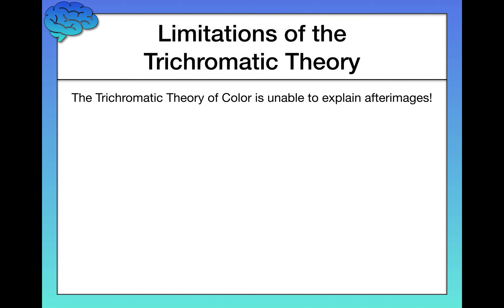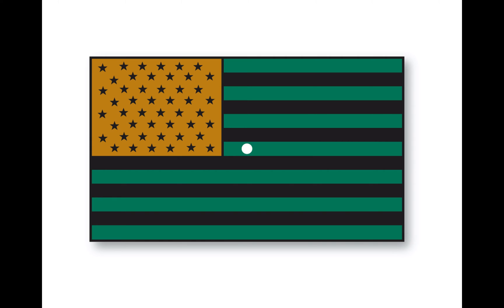So that's some evidence for the trichromatic theory of color vision. But what are some limitations? The trichromatic theory is unable to explain afterimages. To illustrate, let's do a quick demonstration. What I want you to do is fixate your eyes on that white dot in the center of the screen and look at it for a solid 30 seconds. After 30 seconds, I'm going to flip the slide to a blank screen and I want you to tell me what you see.